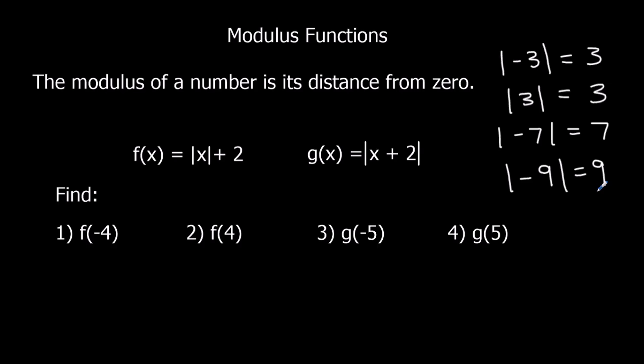On a calculator you should be able to find an ABS button, which means absolute value, and it means the same thing as modulus. You might have to press shift to find it depending on your calculator. If you type in minus 5, you should get out 5, because the modulus of minus 5 is 5.